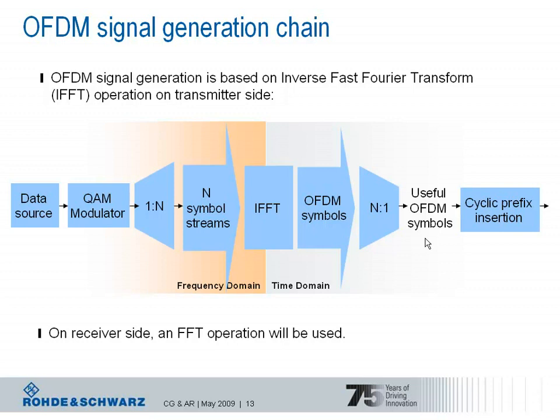To each OFDM symbol a cyclic prefix is appended as a guard interval to protect from inter-symbol interference. A longer cyclic prefix allows radio channels with a larger delay spread to be addressed — for example, a larger cell would expect a larger delay spread, so a configuration with a longer cyclic prefix would be helpful. On the receiver side, an FFT operation receives the symbols and converts them back to the frequency domain.